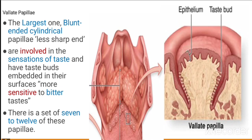Vallate papillae are the largest, blunt-ended, cylindrical papillae. They are involved in the sensation of taste and have taste buds embedded in their surface. They are more sensitive to bitter taste, and there is a set of 7 to 12 of these papillae.